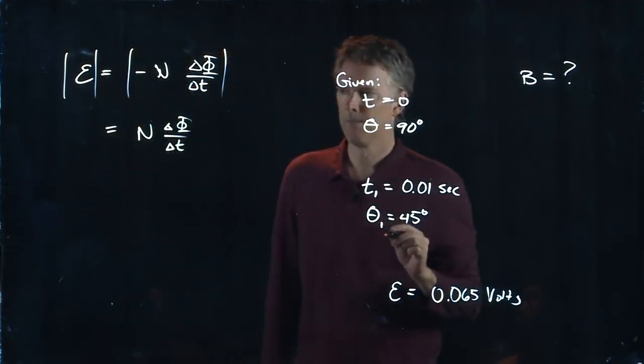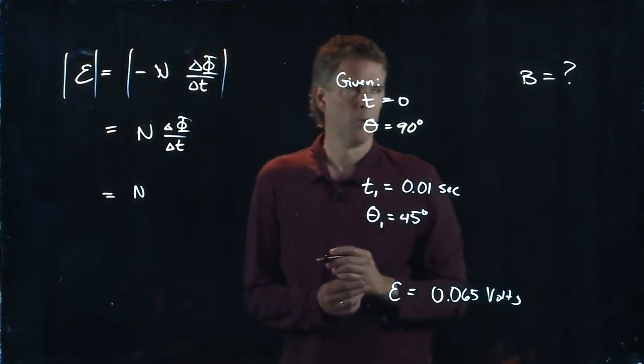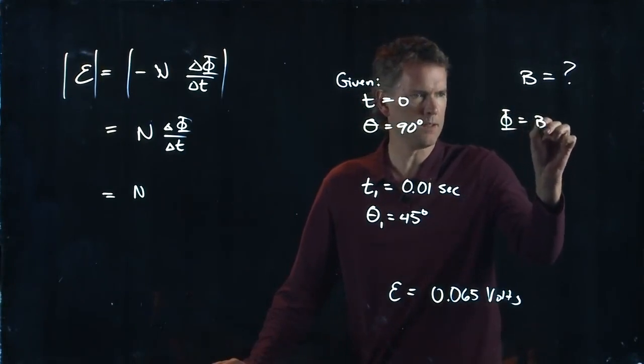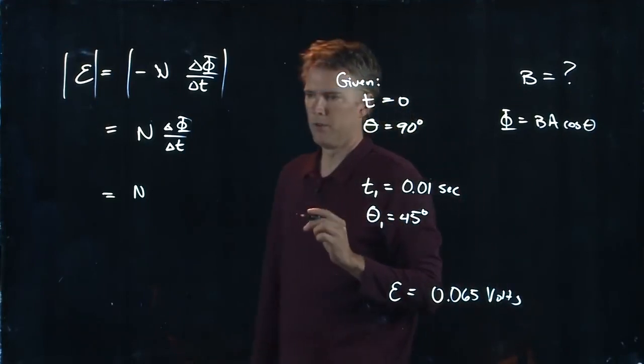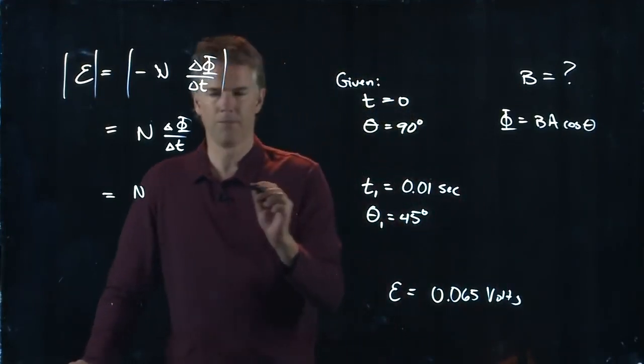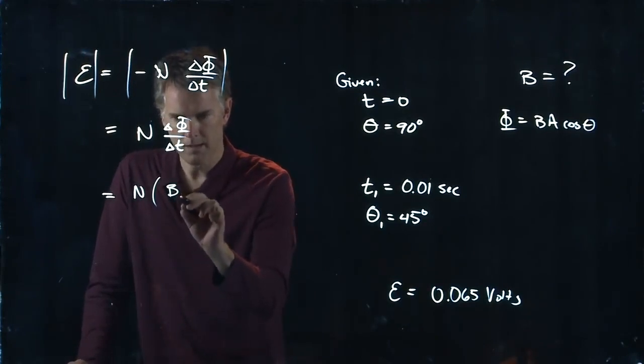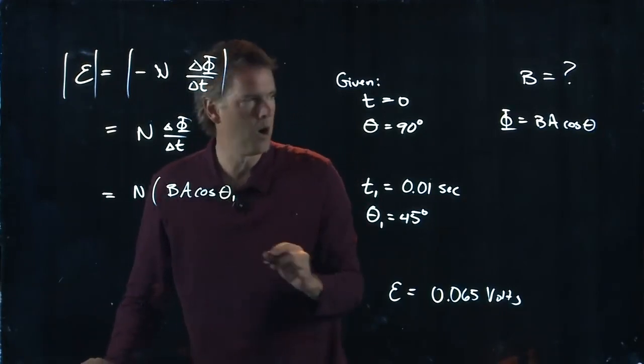It's N delta phi over delta t. But what is delta phi? Well, phi we said was B times A times cosine of theta, so delta phi is just going to be phi in the first case, which is B times A times cosine of some theta one.